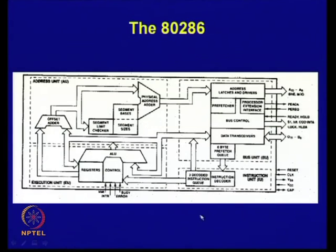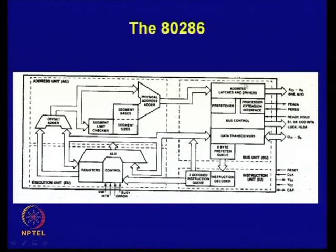This is the internal diagram of the 80286. As you can see, it has various registers, and this is how address generation is done. This part is the bus interface unit, which generates different addresses and other signals. This is the instruction unit where instruction decoding takes place.